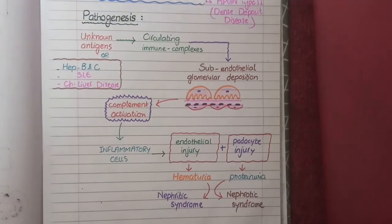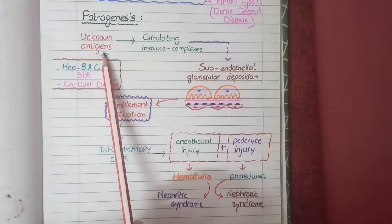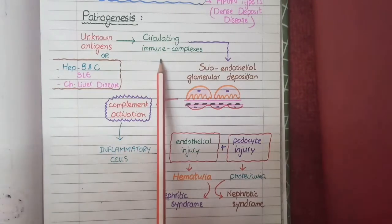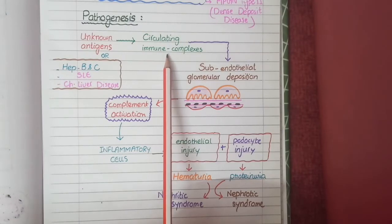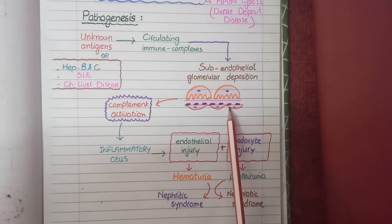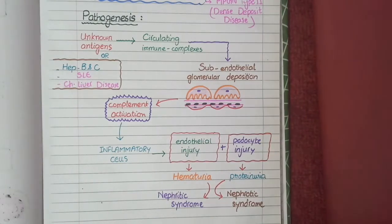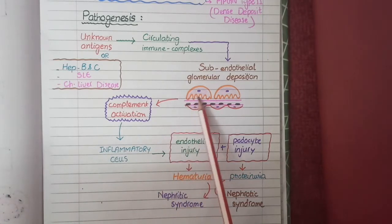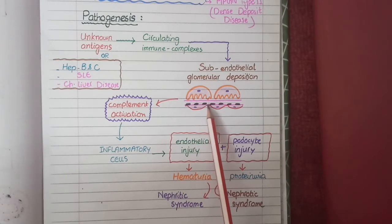This disease starts when the immune system develops antibodies against some unknown antigens, resulting in the formation of circulating immune complexes. These circulating immune complexes have more affinity to bind to the glomerular basement membrane at the subendothelial location, resulting in formation of subendothelial glomerular deposits. Recall that in membranous nephropathy the deposits were subepithelial, but in membranoproliferative glomerulonephritis they are subendothelial.